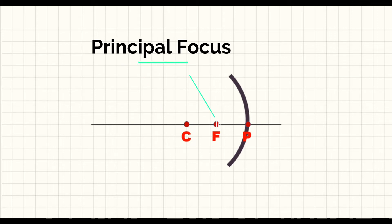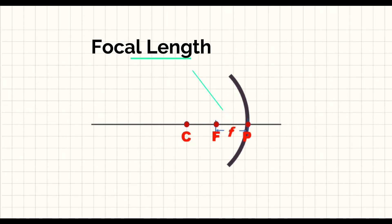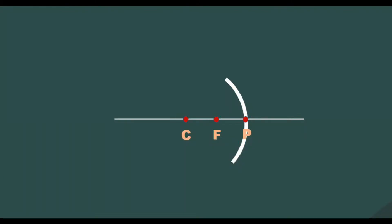The imaginary line passing through the center of curvature and the pole of the spherical mirror is called the principal axis. The principal focus, also called a focal point, is a point where light rays parallel to the principal axis meet after reflecting from the mirror. The focal length is the distance from the pole to the principal focus measured along the principal axis. For mirrors of small aperture, the focal length is half of the radius of curvature.